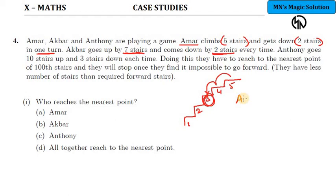So the three people - Amar, Akbar and Anthony - in one turn, how many steps are they able to climb? Amar three steps, Akbar seven minus two which is five steps, and Anthony ten minus three which is seven steps. So net number of steps they can jump or climb: three, five and seven. During this, they have to reach the nearest point of hundredth stair. So total hundred stairs are there.